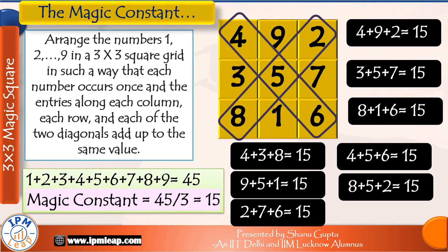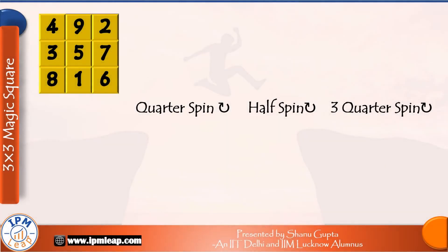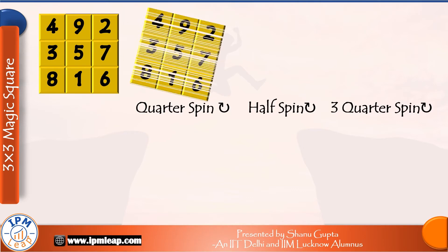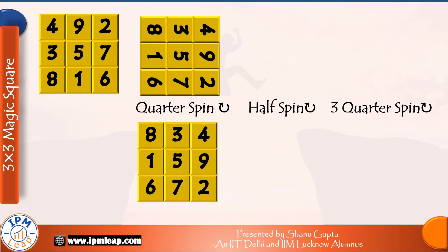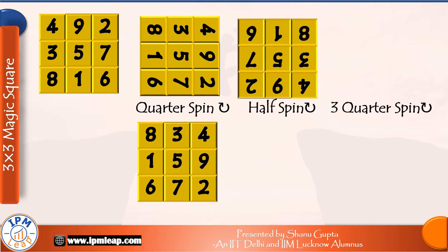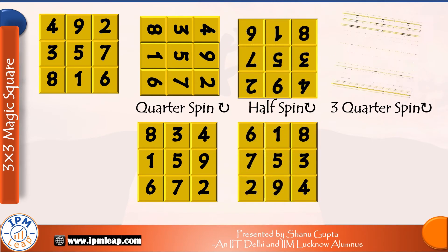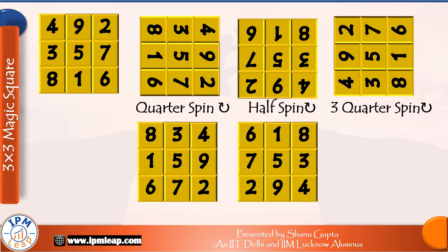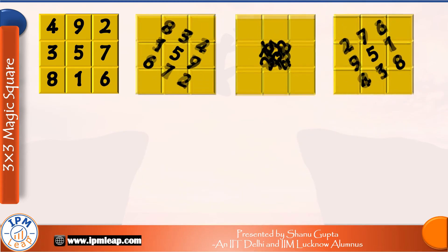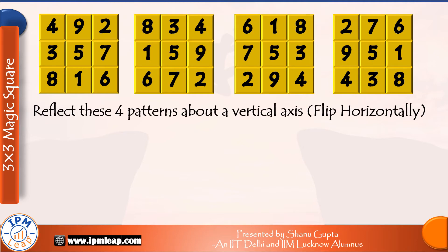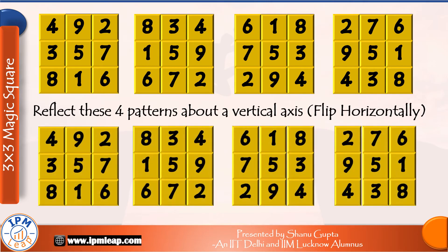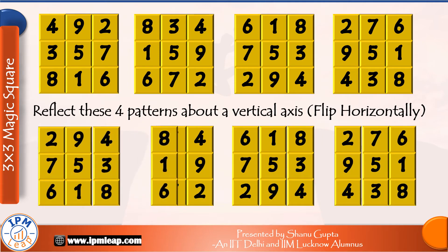So that was the 3x3 magic square. Now there are 8 variations of the same 3x3 square. First, we need to account for rotational variance, so let's bring each of the 4 edges of our original square on top one by one. First, a quarter spin clockwise. Then a half spin of 180 degrees clockwise. And then a spin by three-quarters or 270 degrees. Next, we reflect these 4 patterns about a vertical axis. So there could be 8 variations of the same 3x3 magic square.